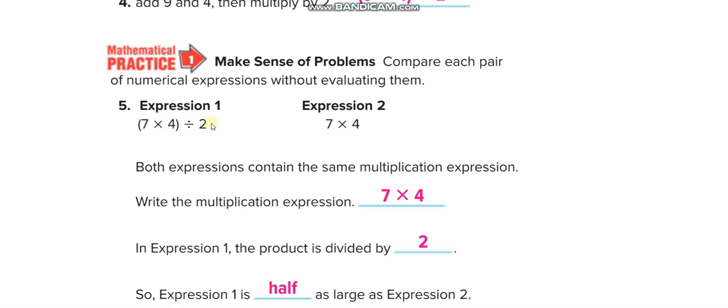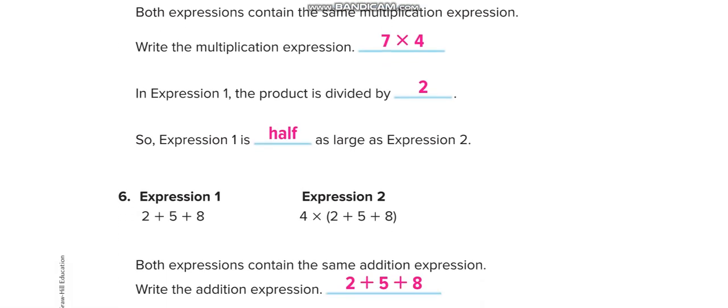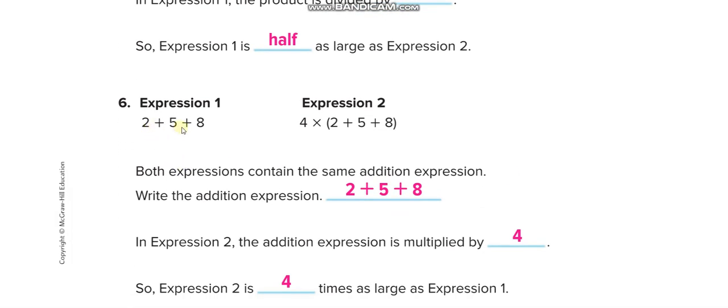Okay, the difference between these two. 7 times 4. Here they are dividing by 2 also. So dividing by 2 makes it half. So the expression 1 is half of expression 2. And this one, they are multiplying by 4, so expression 2 is 4 times of expression 1.